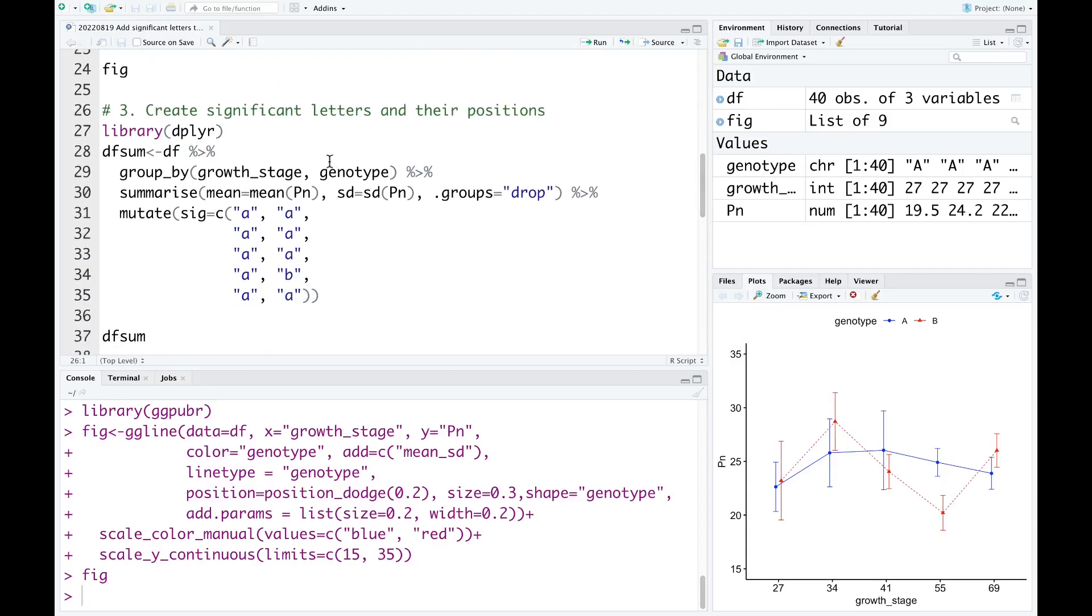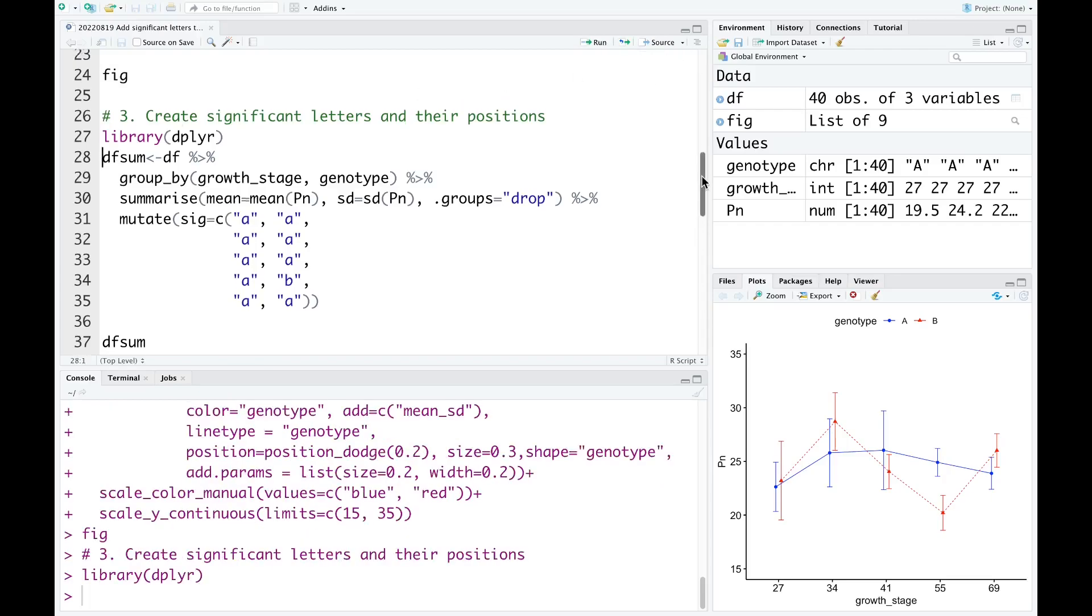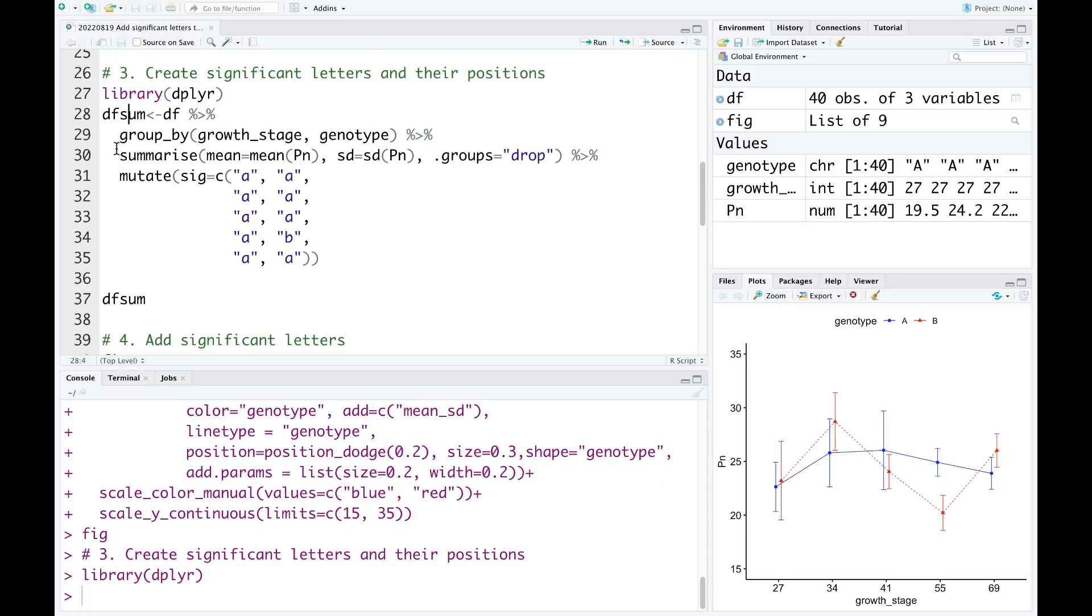First, we need to create significant letters and their positions. I use the package dplyr. We need to create a data frame that is df-sum from the df-pipe. And then we group by growth stage and genotype. And then we use summarize to calculate the mean and standard deviation of photosynthesis.